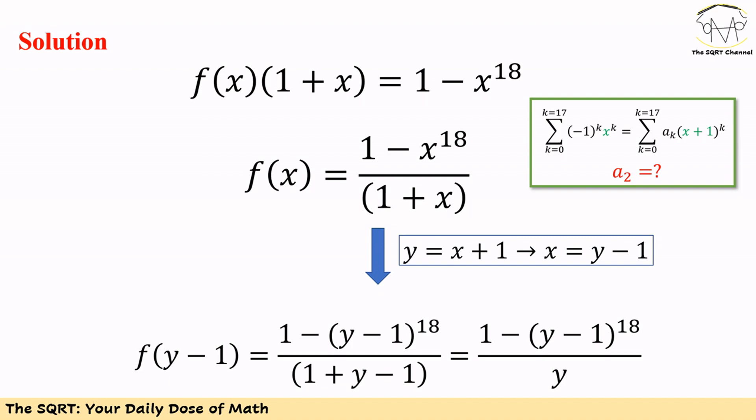As a result, f of x can be written as 1 minus x to the power of 18 over 1 plus x.